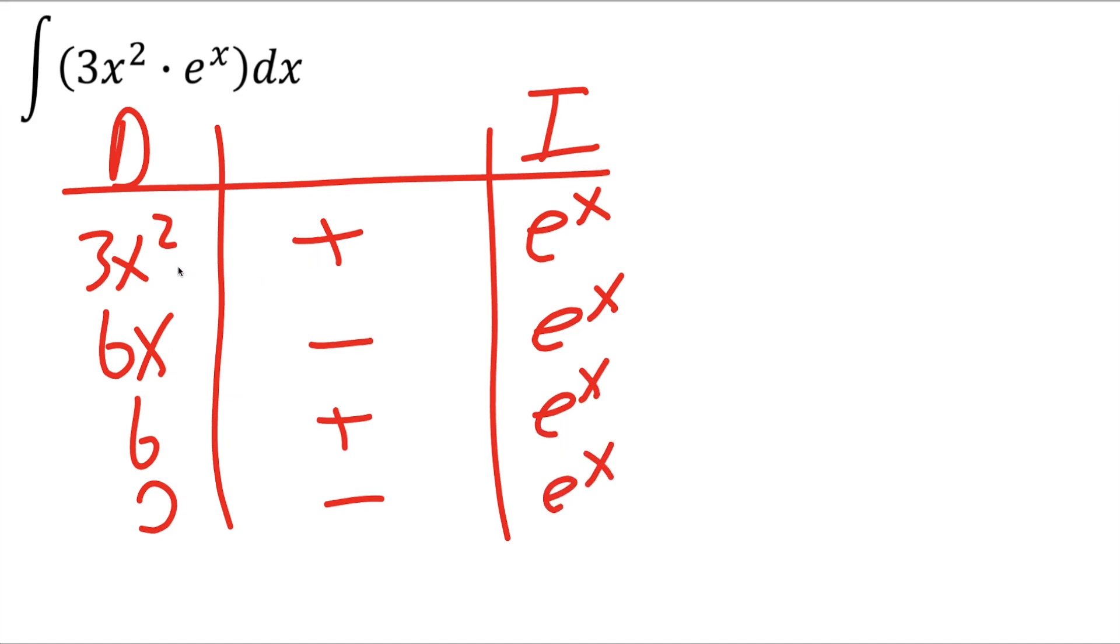So now we'll take our 3x squared, and it's going to be multiplied by e raised to x. So it's like 3x squared times positive e raised to x. And then the next one, 6x times negative 1 times e raised to x. And then this one,